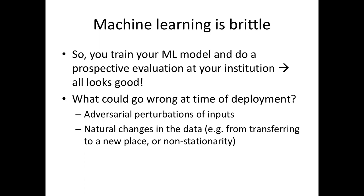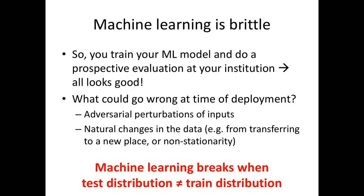We'll be talking about how to deal with dataset shift of two different varieties: the first is adversarial perturbations to data, and the second is data that changes for natural reasons. The reason it's not obvious that your algorithm should still work is because the number one assumption in machine learning is that your training distribution is drawn from the same distribution as your test data. So if the data distribution has changed, even if your accuracy on held-out data looks good, there's no reason it should continue to look good in the new setting.